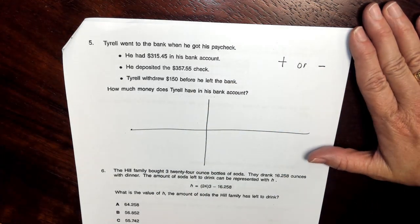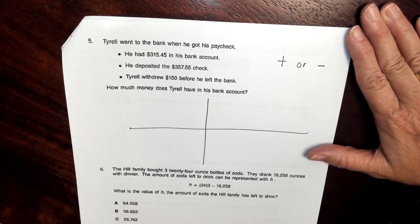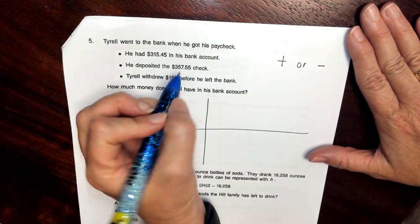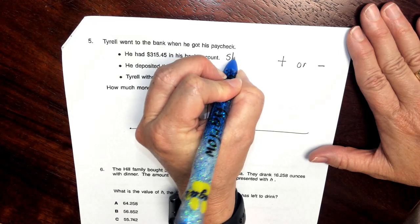Let's reread it again. It says Terrell went to the bank to get his paycheck. He had $315.45 in his bank account. So when I read that and I stop and think, this is what he started with.